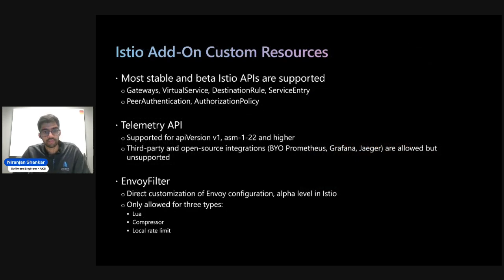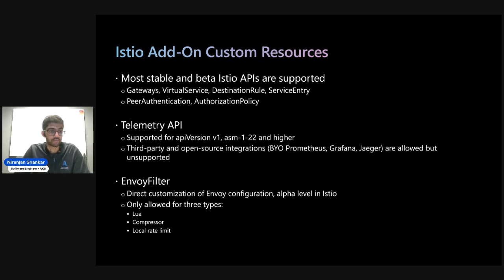Jumping to custom resources: most stable and beta Istio APIs are supported — for instance, gateways, virtual services, destination rules, peer authentication for mTLS, and authorization policies. These are pretty commonly used APIs and something that you'd receive support for.